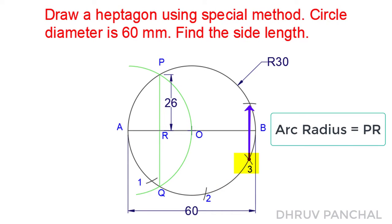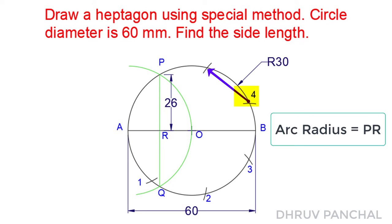Take point 3 as center with the same radius, draw an arc on the circle and mark this point as point 4. Take point 4 as center with the same radius, draw an arc on the circle and mark this as point 5. Take point 5 as center with the same radius, draw an arc on the circle and mark this as point 6.